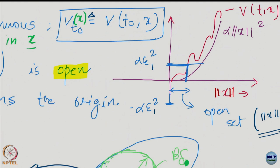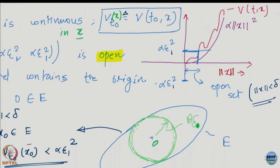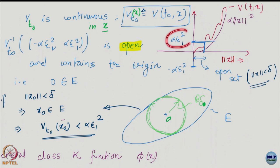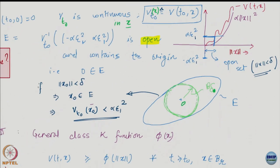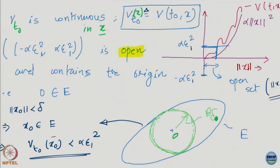So the important thing to remember is that this is a continuous function, so it must take all values within a range. It has to also take the value alpha * epsilon_1 squared. This is basically the intermediate value theorem — it says that if you have a continuous function which maps [a,b] to [p,q], then the function has to take all values between p and q. It cannot miss some value, simply because it is continuous.